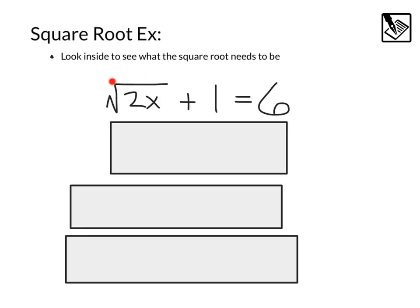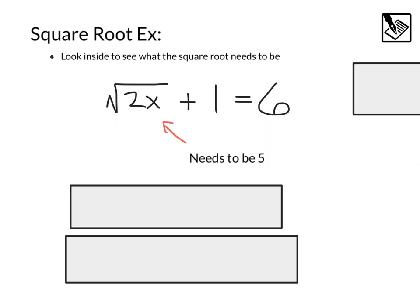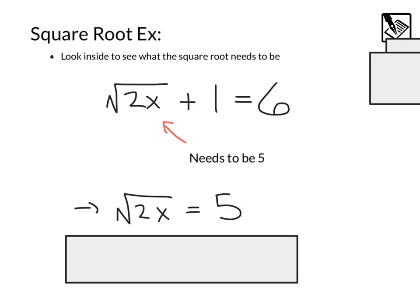Our next example involves a square root. We've got square root of 2x plus 1 equals 6. And we're actually going to look inside to see what that square root needs to be to help us piece together something we can easily solve. And in fact, if I'm looking at this equation, I see this plus 1, I know this whole thing needs to be a 5 because 5 plus 1 equals 6. So we can take that equation, square root of 2x, and we can say that needs to equal 5.